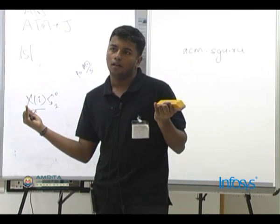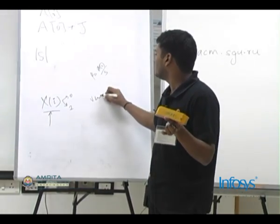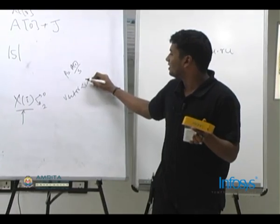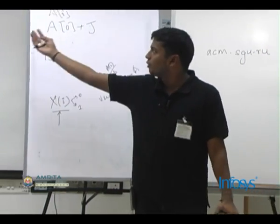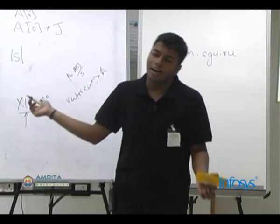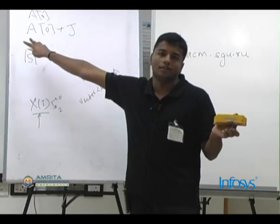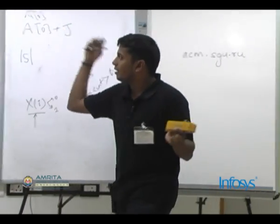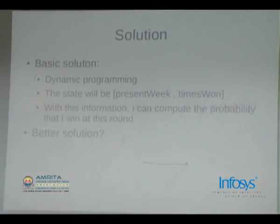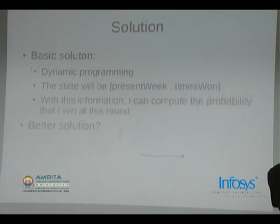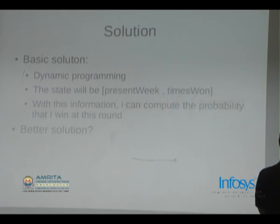If I know the number of times I have won, I can determine my balance. The brute force would track all possible outcomes, but the key insight is: the state only depends on the current week and how many times I have won — not on who else wins. So you represent the state as (present week, times won), and this reduces to a 1000×1000 DP.